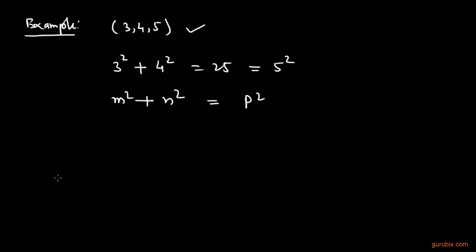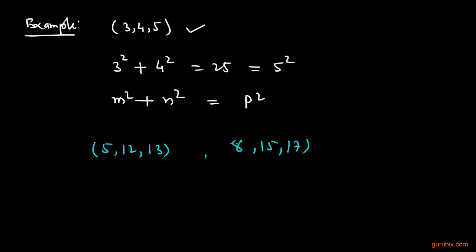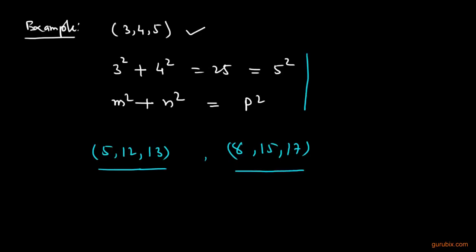Let me give you another example: 5, 12, and 13. This is also a Pythagorean triplet. Similarly, 8, 15, 17 is also a Pythagorean triplet. These are some other examples of Pythagorean triplets.